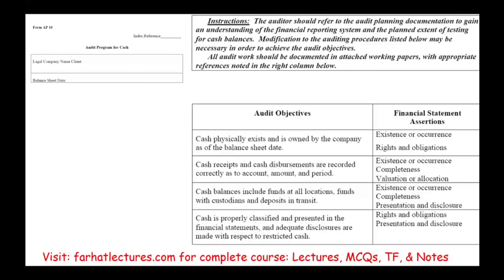This is an actual audit program specifically for the account of cash. Notice you have the cash account, the company name, the balance sheet date — this is form AP10. You can download these audit programs from the internet. Here are the audit objectives for cash: existence or occurrence, rights and obligations. The audit objective states that cash physically exists and is owned by the company as of the balance sheet date. Also, cash receipts and disbursements are recorded correctly as to account, amount, and period — verifying existence or occurrence, completeness, and valuation or allocation.